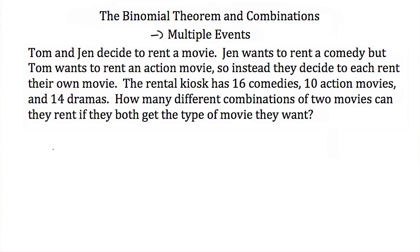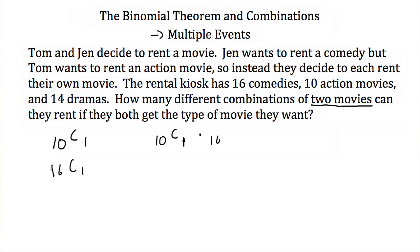Jen is going to choose one movie out of 16 comedies, so Jen's combination of movies would be 16 choose one. What we're asked for is how many different combinations of the two movies they're both going to rent. The movie Tom rents is limited to action movies and Jen's to comedies, so the total different combinations would be their individual combinations multiplied together, using the fundamental counting principle.